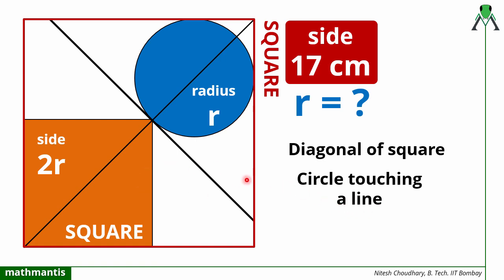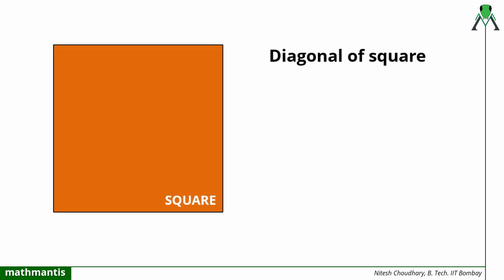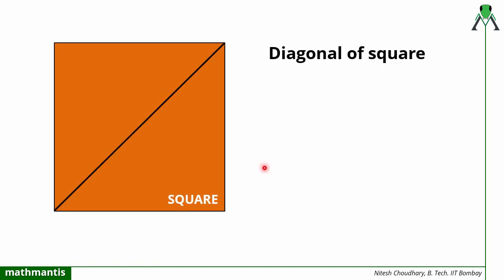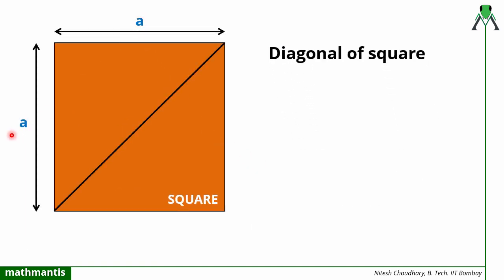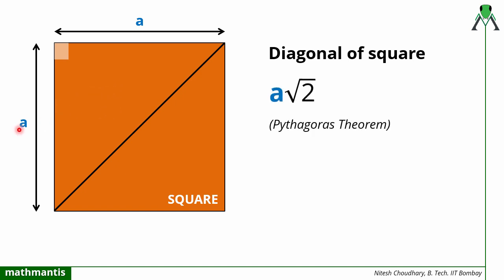By looking at this question I know that geometrically I have to use these properties to solve the question. First, let me define the diagonal of the square. We know that if the side of the square is a, we can define the diagonal as a√2 because this angle is 90 degrees. Applying Pythagoras theorem in this triangle gives us the diagonal length equal to a√2.